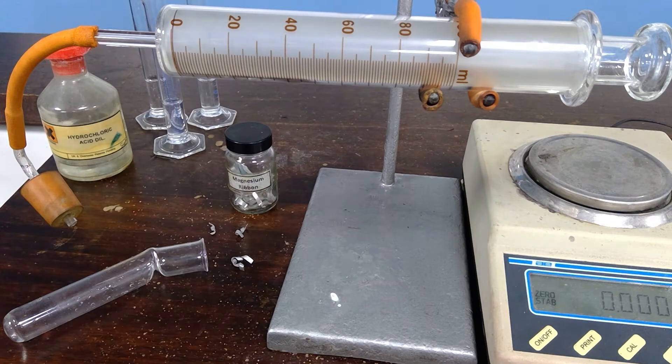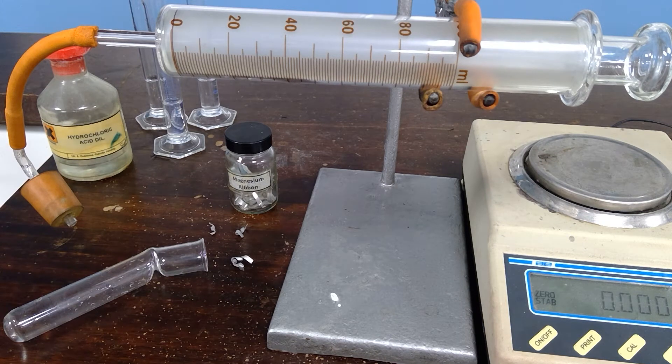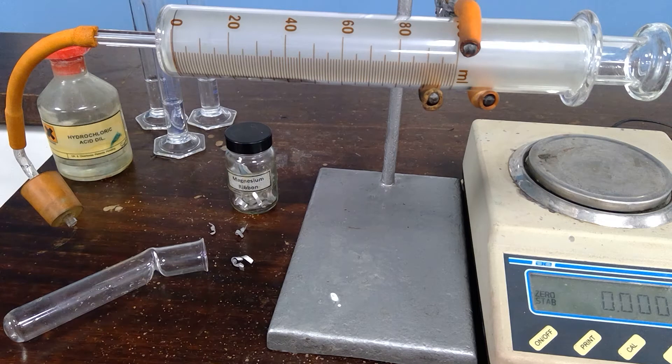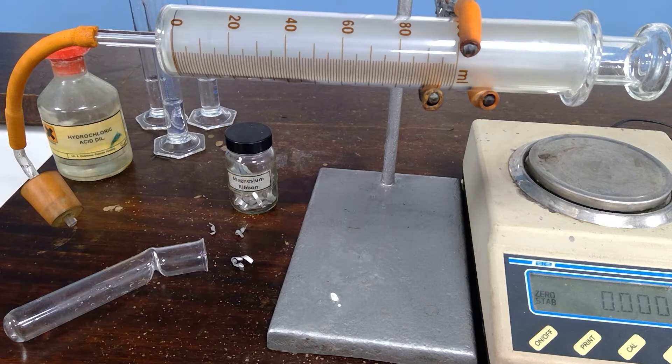The volume of the hydrogen produced should be recorded at the end of each experiment. Although the gas syringe says milliliter, you should be recording cubic centimeters, cm cubed. Let's start then with the first smallest piece of magnesium.